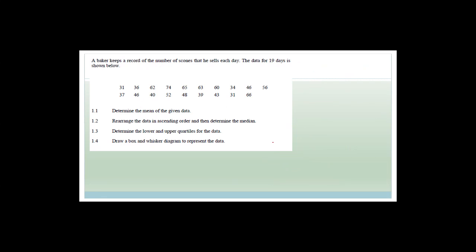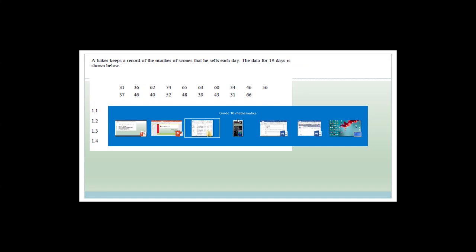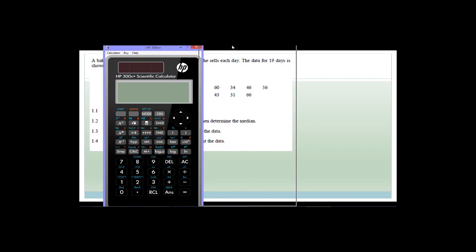Now let's do some data handling. A baker keeps a record of the number of scones sold every day; the data for 19 days is shown. Determine the mean of the given data. The data is not in numerical order. We'll enter it into the calculator in stats mode, one-variable, and add up all values then divide by 19.